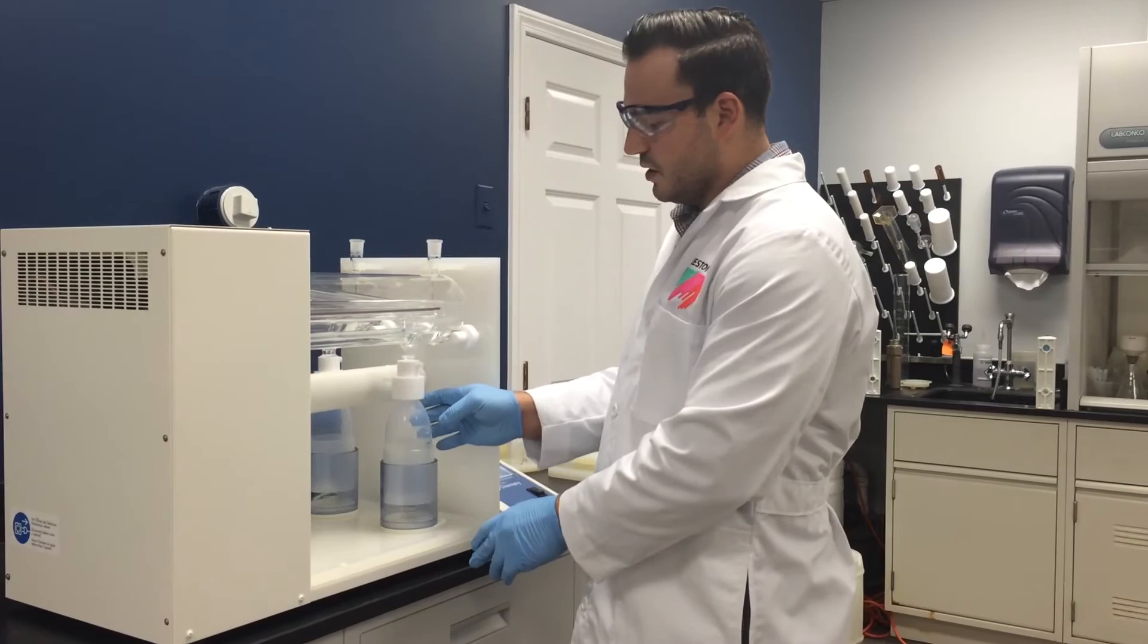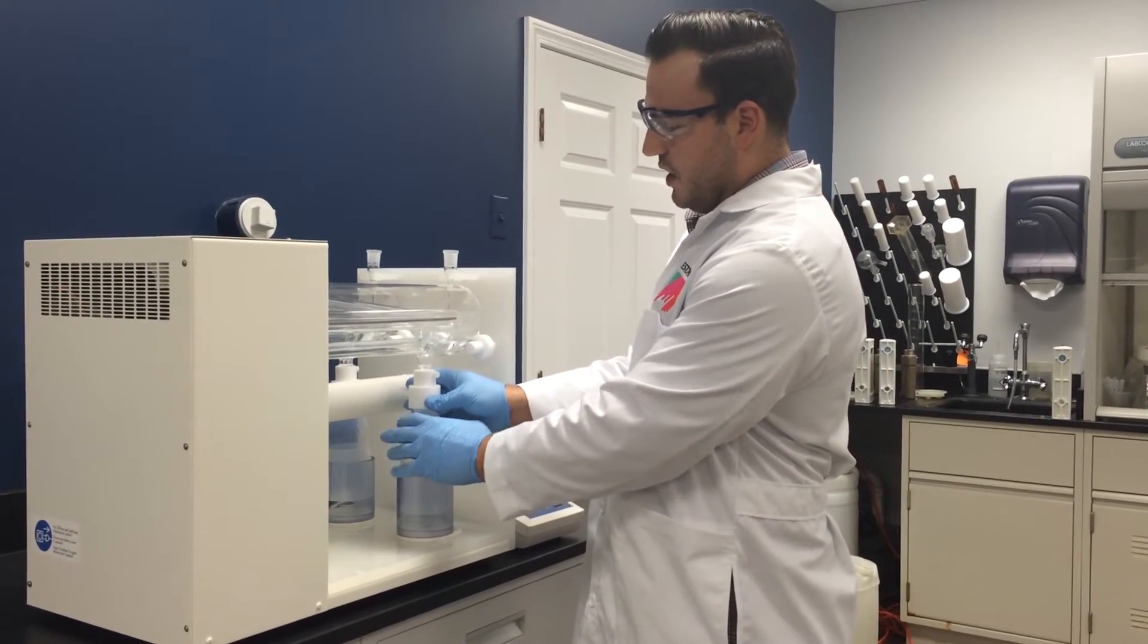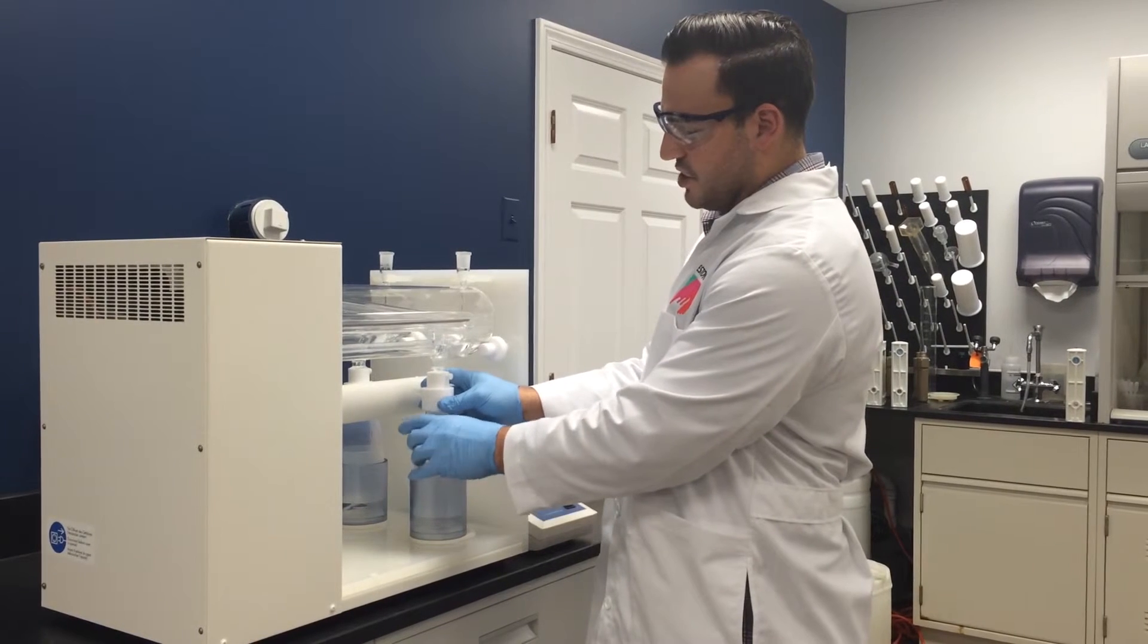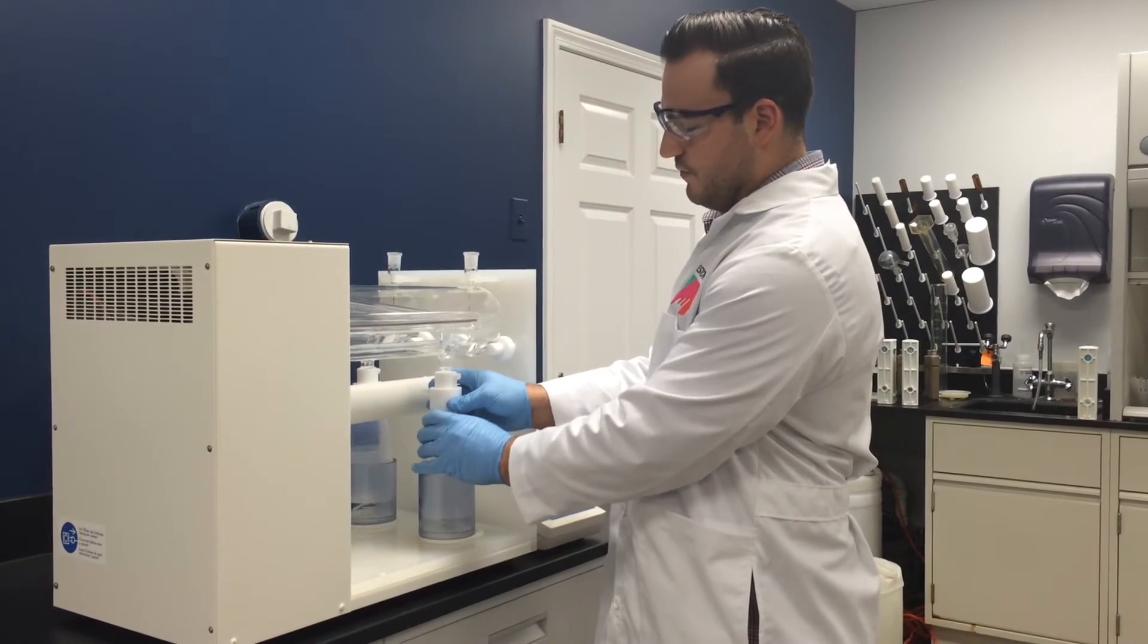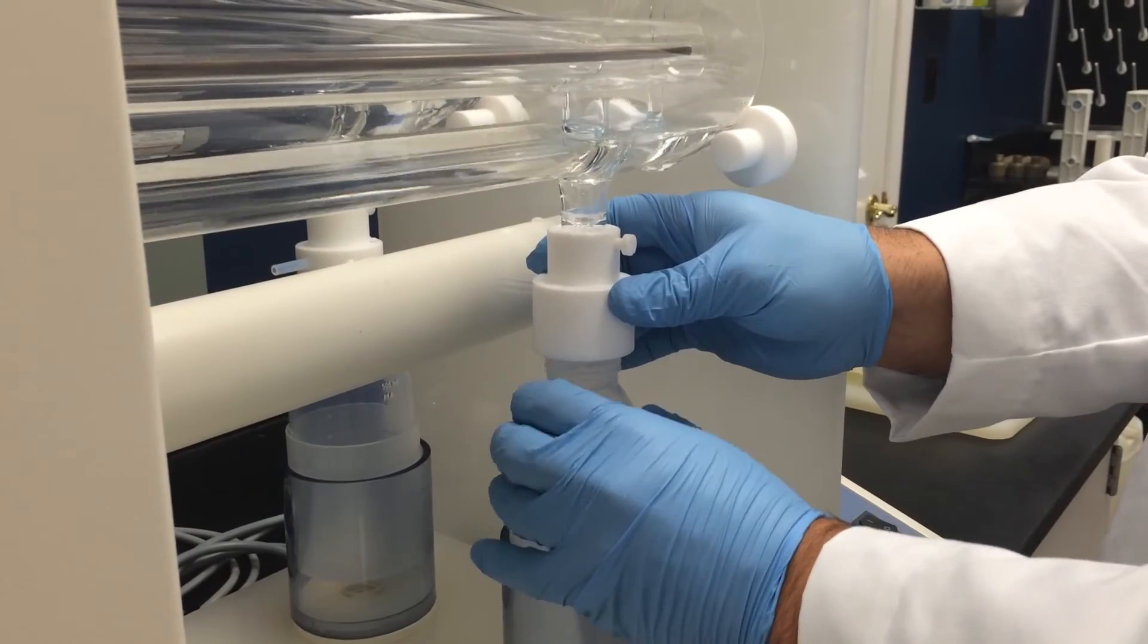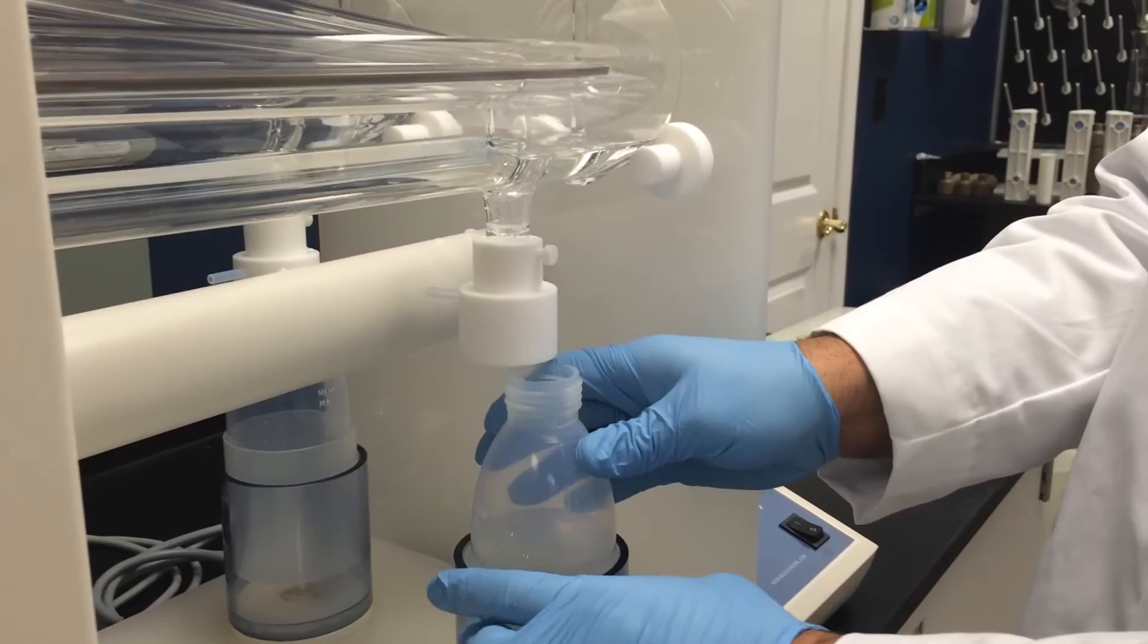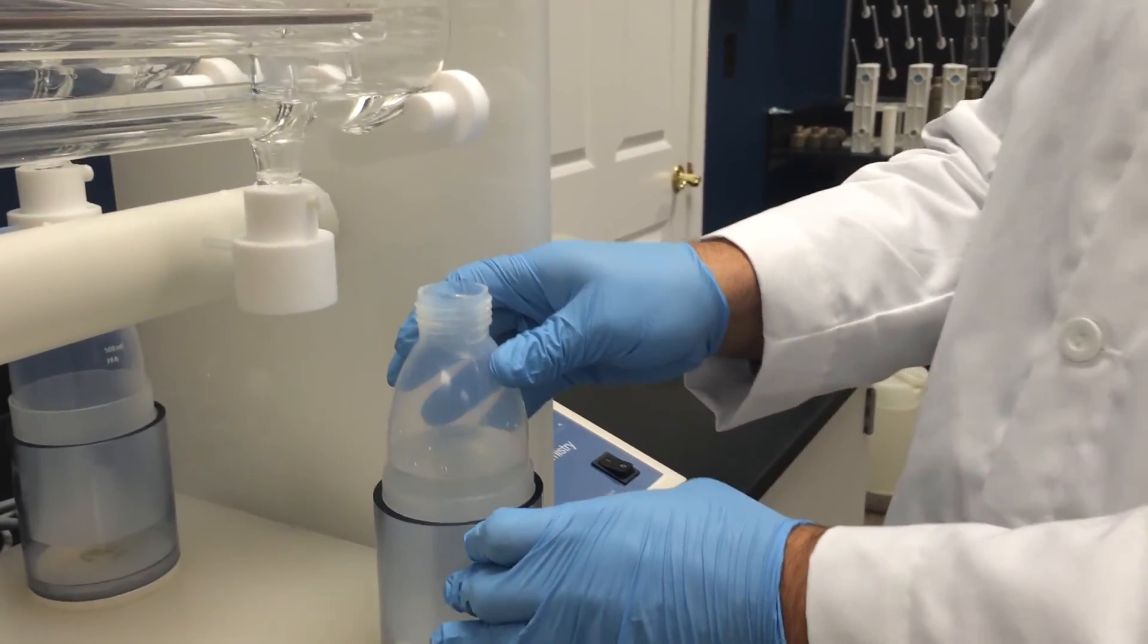To remove the collection flask turn it clockwise while stabilizing the teflon connection until the distillation flask is completely separated. Press down and slide the collection flask out of the system.